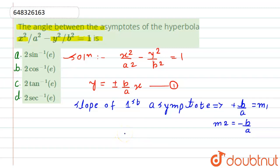So from here, we can say that the angle between these two asymptotes can be given by the formula: tan theta equals m1 minus m2 divided by 1 plus m1 into m2.